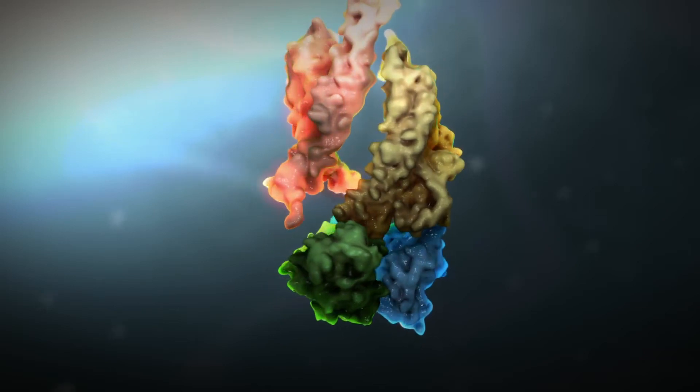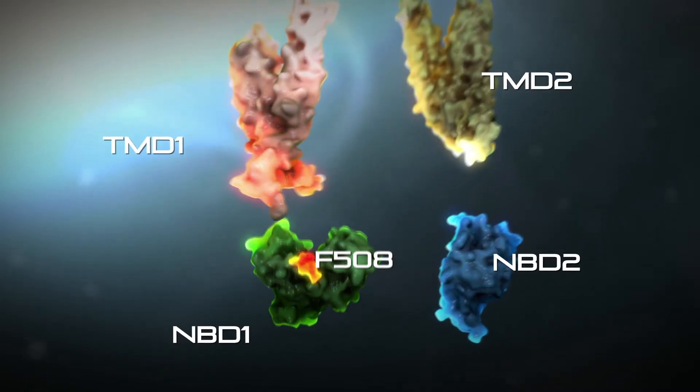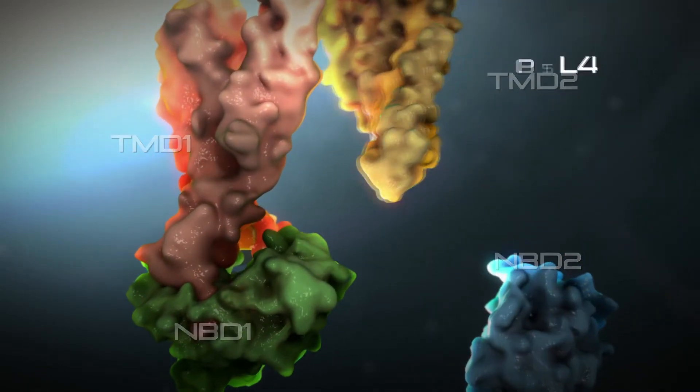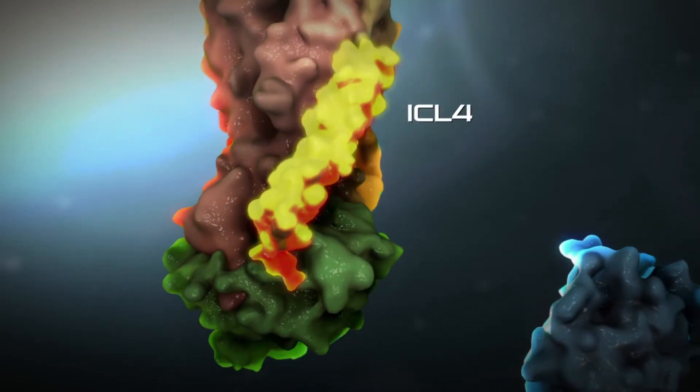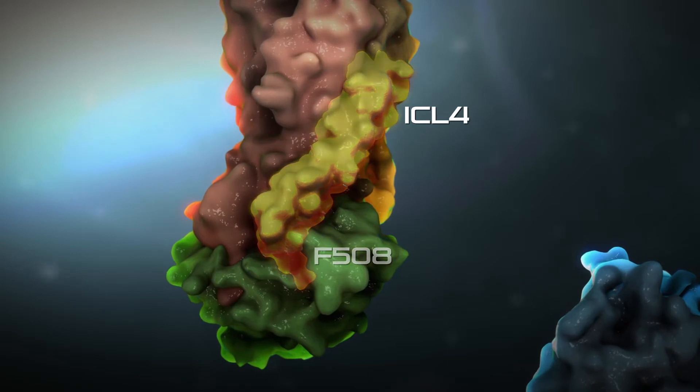Each of these domains has a different name, such as TMD1 and NBD2. All the domains fit together to form a functional CFTR protein, and the area where they fit together snugly is right where an amino acid building block called F508 is located.